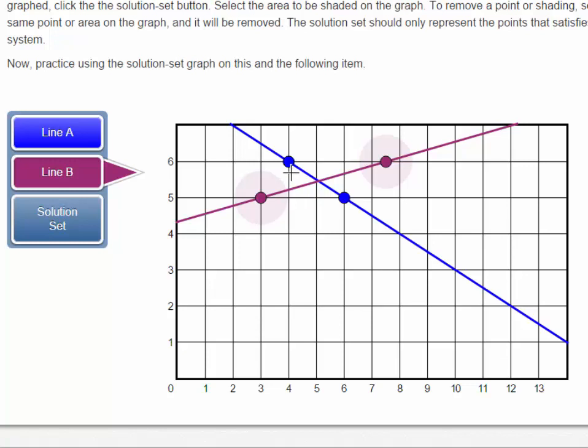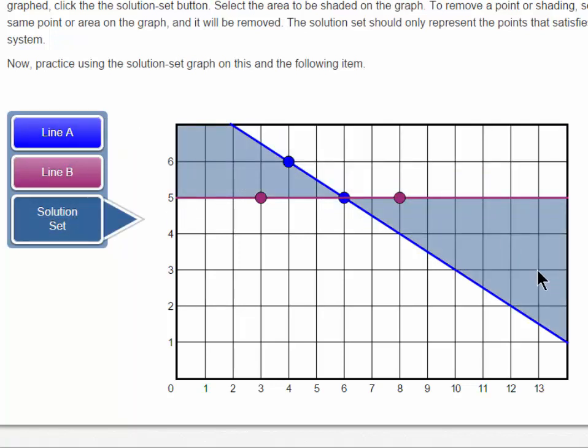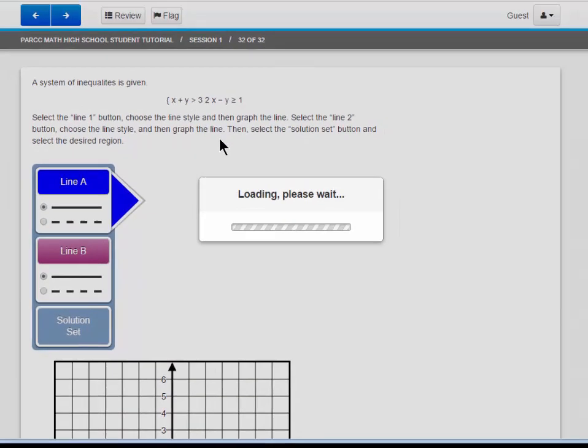If I'm selected on line B, I can alter the line, but only line B. So, if you need to manipulate line A, make sure that you're clicking on line A, and you'll see the triangle indicator. Clicking on solution set will take you back to the shading function. Practice this with the next item in the series.